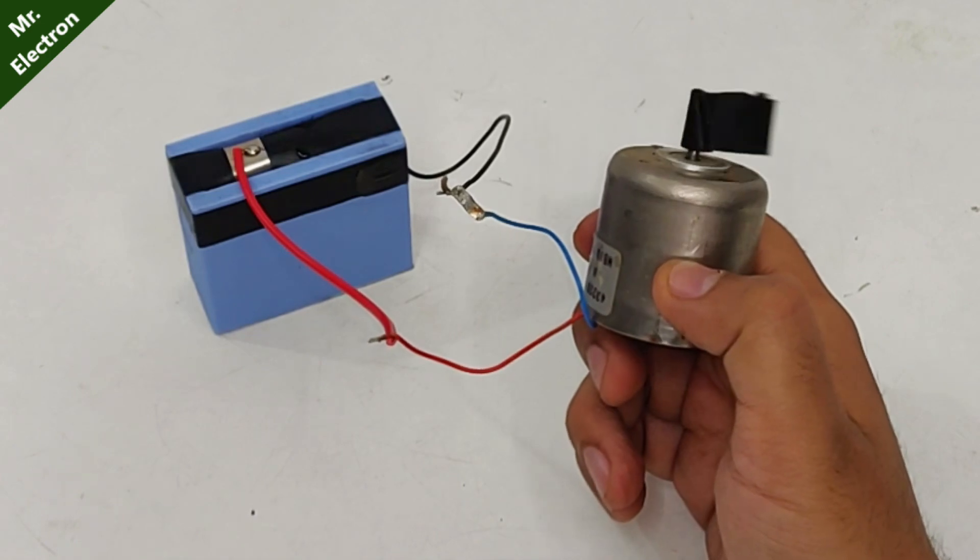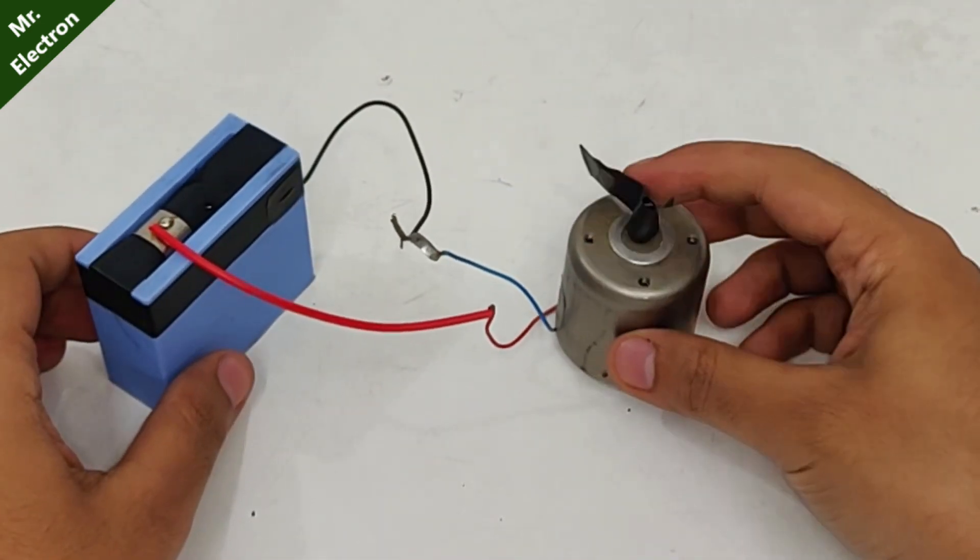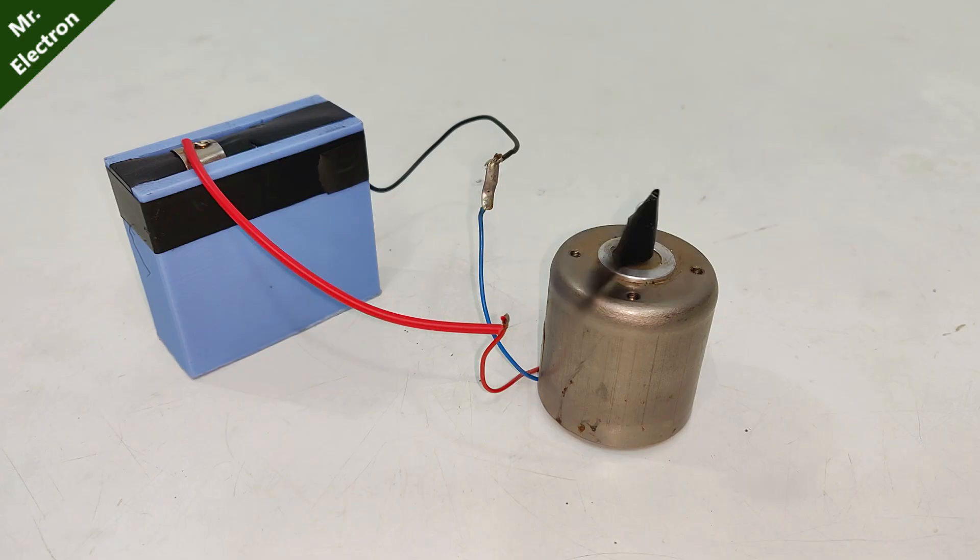Yeah, the voltage is low because of which the RPM is very low. If we make many cells like this and connect all of them in series, we can achieve 12 volts and higher RPM, of course.